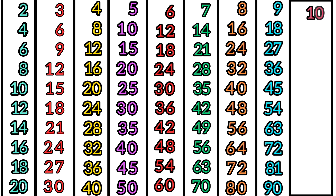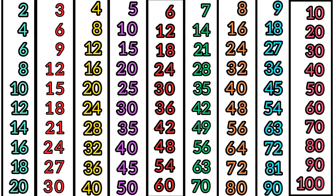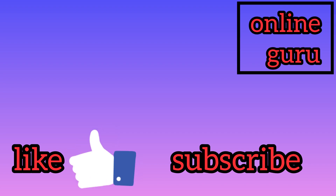10 times tables. 10 times 1 is 10. 10 times 2 is 20. 10 times 3 is 30. 10 times 4 is 40. 10 times 5 is 50. 10 times 6 is 60. 10 times 7 is 70. 10 times 8 is 80. 10 times 9 is 90. 10 times 10 is 100. If you like this video, like, share and subscribe. Thanks for watching.